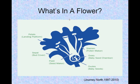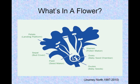What's in a flower? Here's our diagram of the flower. Here we have the petals, the landing platform. The sepal is the bud cover. The pistil is the seed maker. The stamen, the pollen maker. The ovary is the baby seed chamber. And then we have the ovules, the actual baby seed.